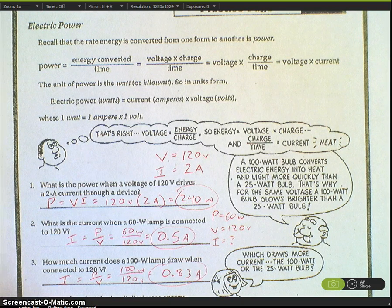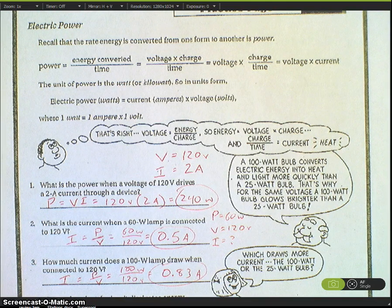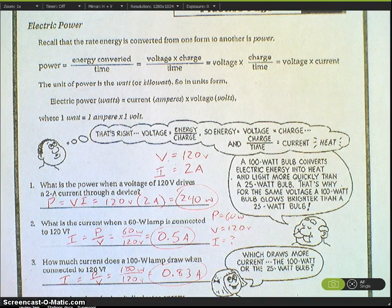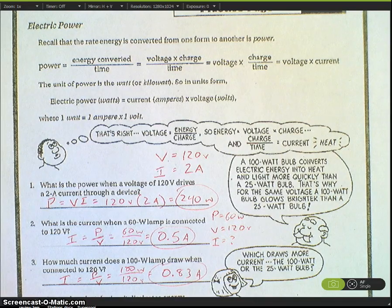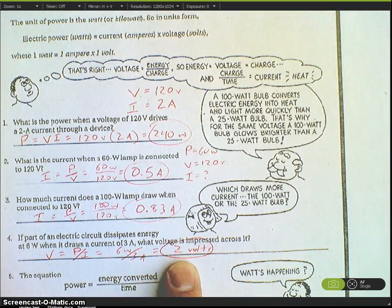Number four, same kind of process. Take the power equation P equals V times I, divide both sides by I. We get 6 watts divided by 3 amps equals 2 volts. Two volts is our answer.